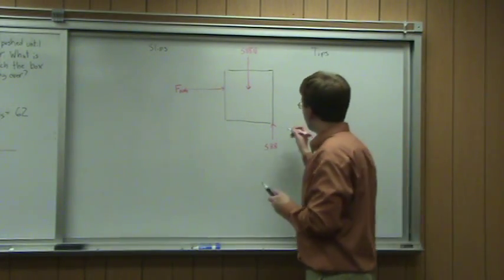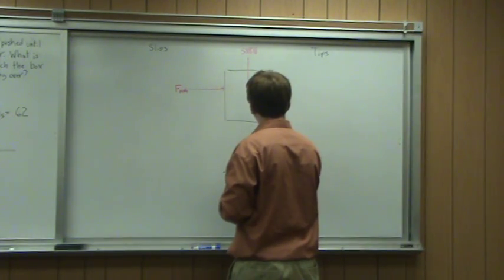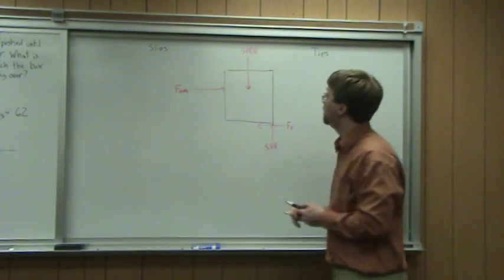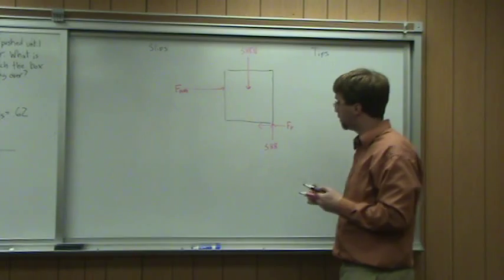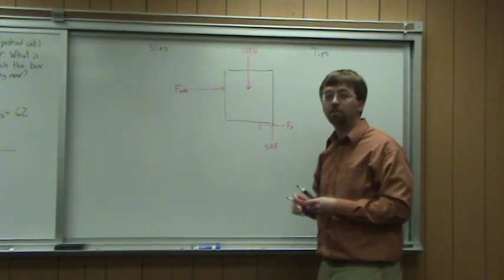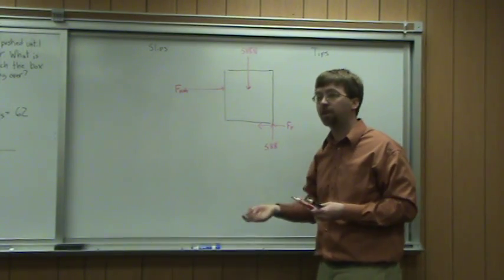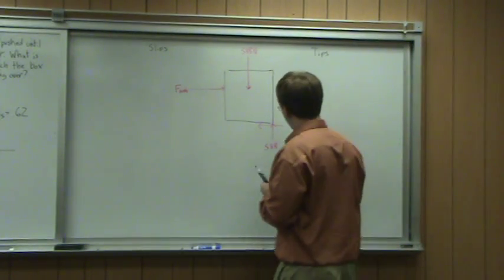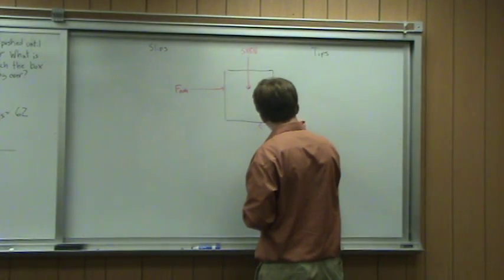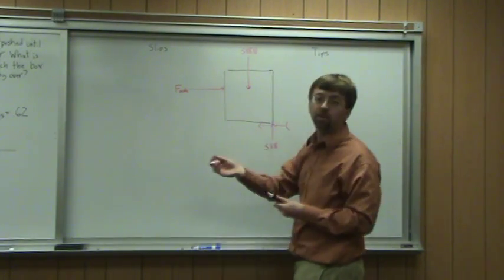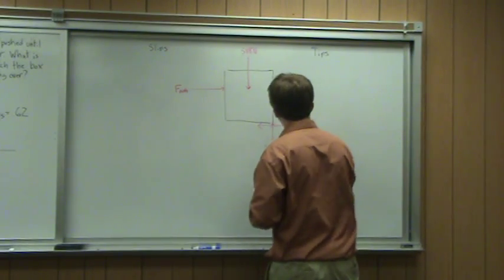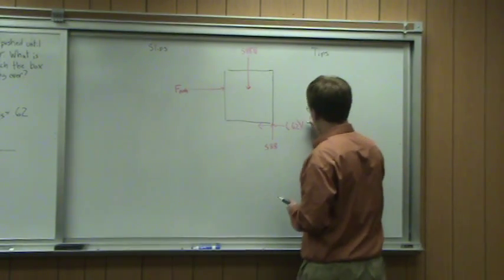What I also have down here is the friction force. So if it is about to slip, my friction force is simply going to be the static coefficient of friction, mu static, times the normal force. So this down here, the static coefficient of friction was 0.62, 0.62 times the normal force of 588.